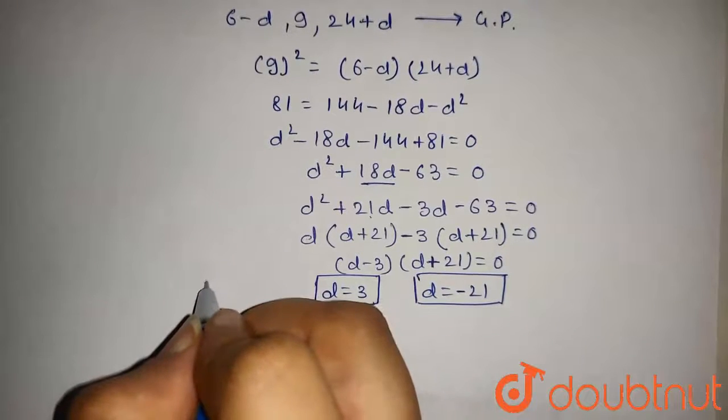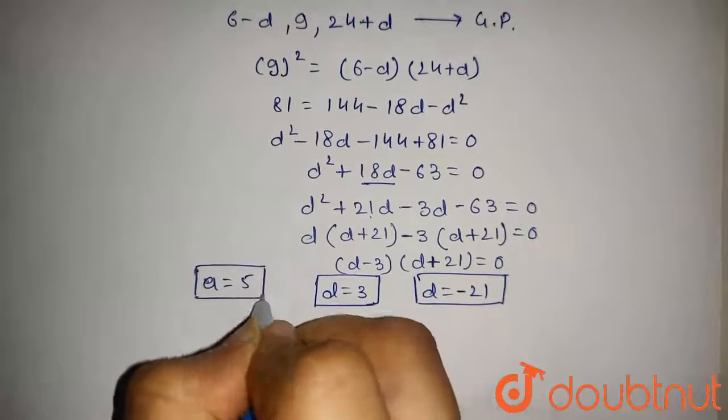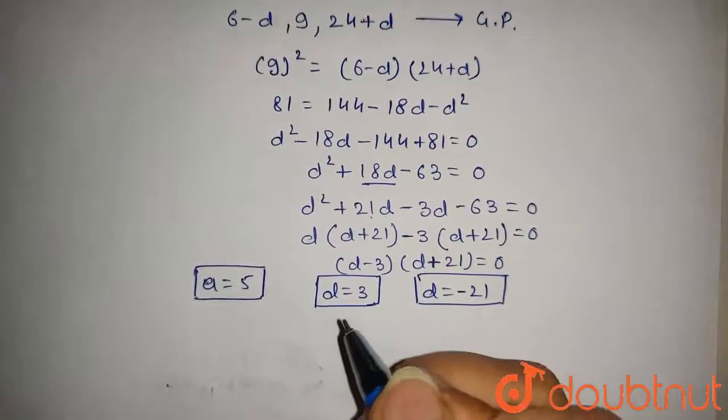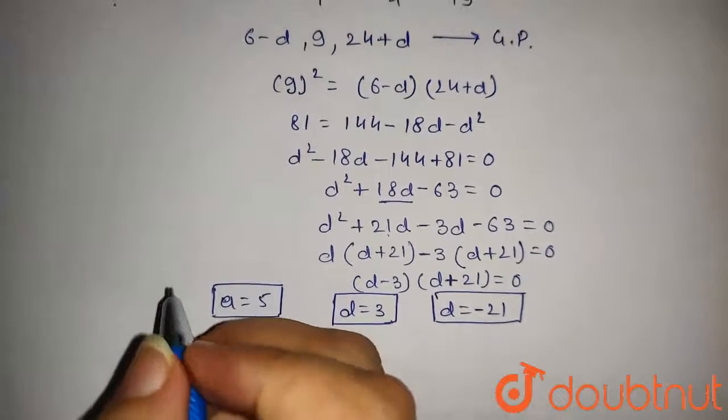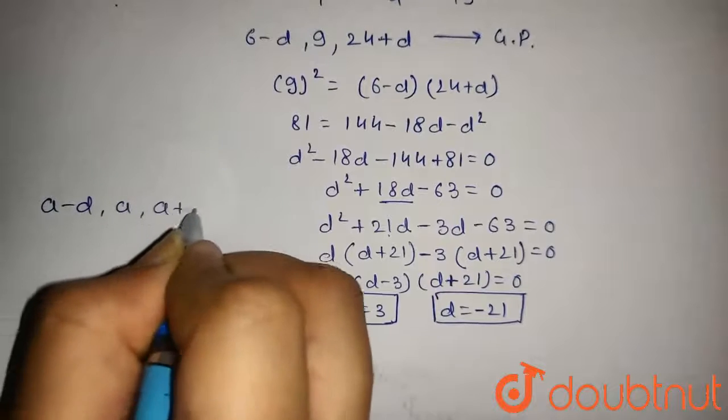We get D and we have found earlier that A equals 5. Now we have to find the numbers which are in AP. So the numbers in AP are A minus D, A and A plus D.